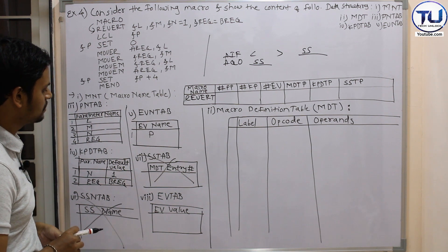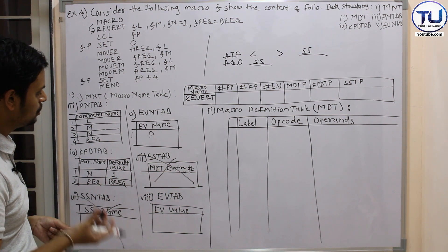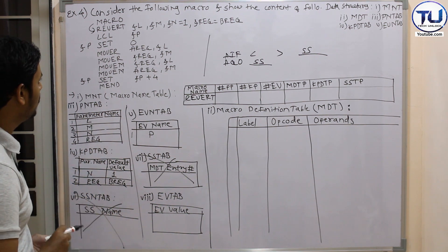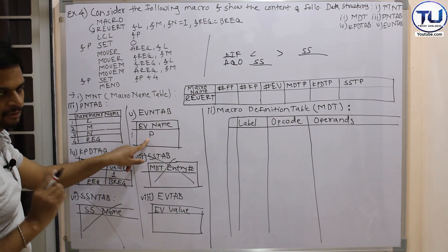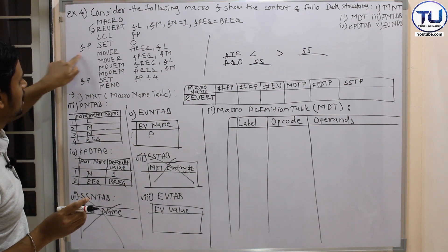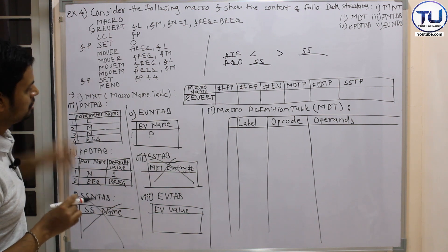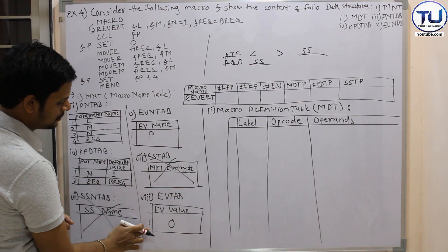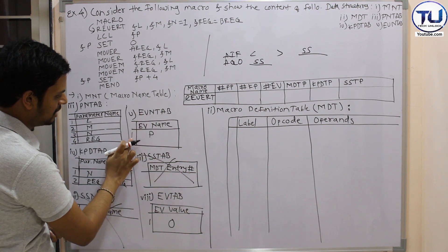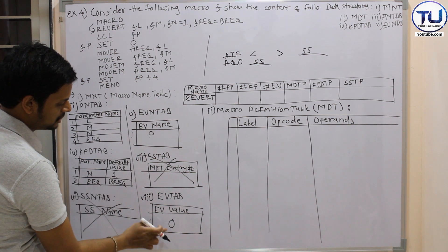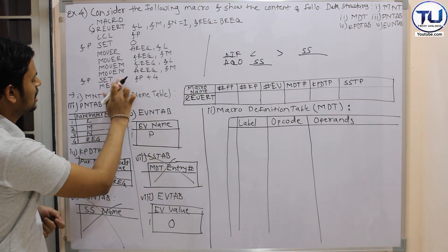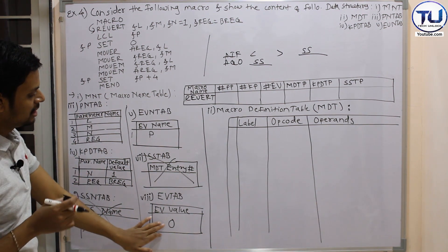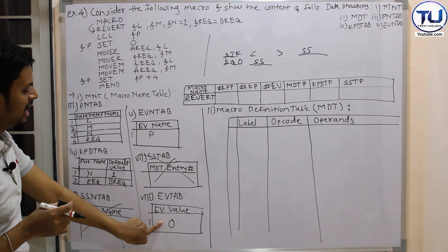Next is the expansion variable table. In the expansion variable table we store each expansion variable's current value. Our only expansion variable is P, and by default its value is set to 0. So we write one entry with value 0. There is another SET statement for &P later in the program, but we consider the default starting value for this table, which is 0.